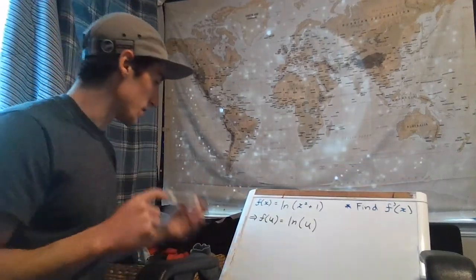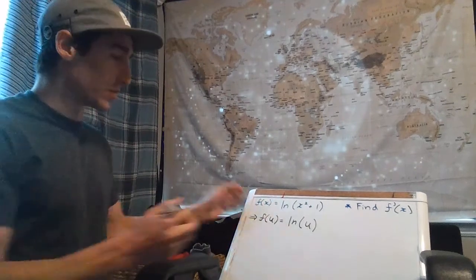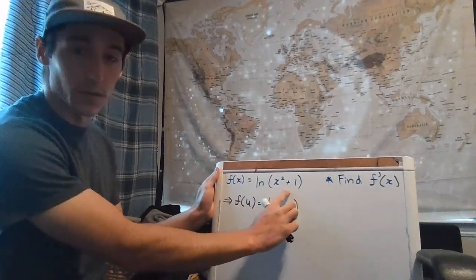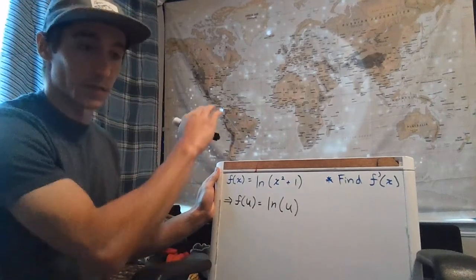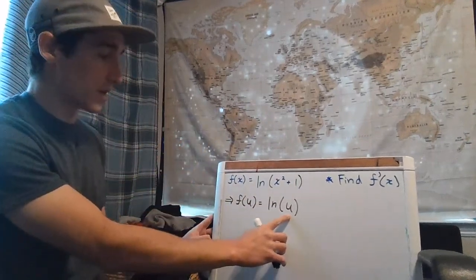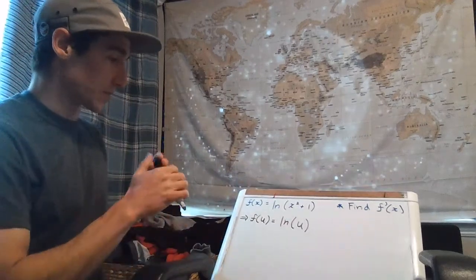It doesn't matter what u is. u can be something a lot more complicated than just a single variable—it could be a polynomial like this, some sort of rational function, or something more complicated. It doesn't matter. When we take the derivative of the natural log of u...